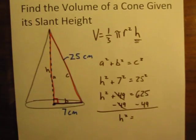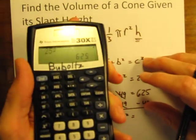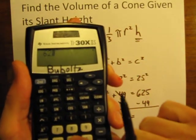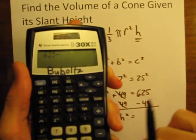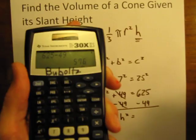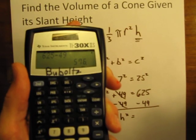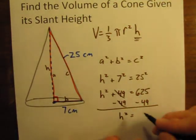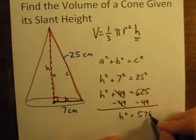And we are left with h squared is equal to, and if you can't do that in your head, we can just simply do 625 minus 49 is equal to 576.